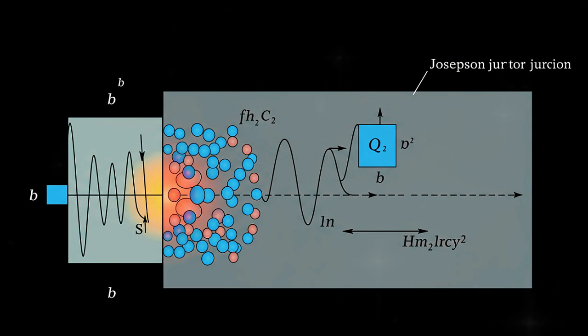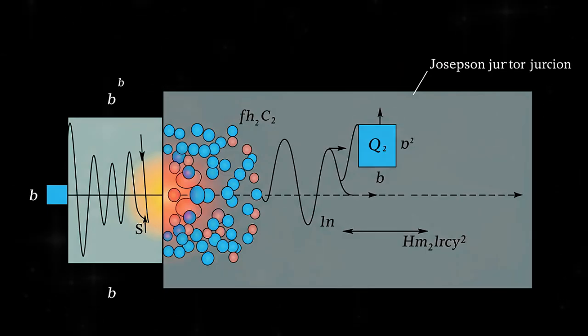This is how tunneling in Josephson junctions is utilized to store, manipulate, and retrieve quantum information, establishing the foundation of contemporary superconducting quantum computers.